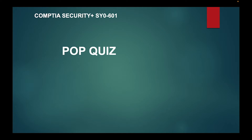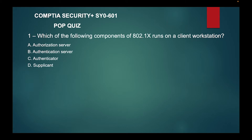We are working on part 44 of CompTIA Security Plus SY0-601 pop quiz. Question one: which of the following components of 802.1x runs on a client workstation? Is it A, authorization server; B, authentication server; C, authenticator; or D, supplicant?